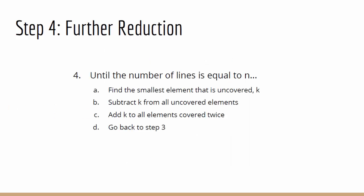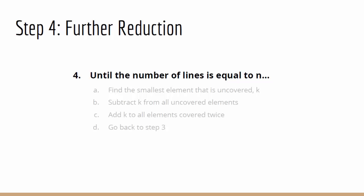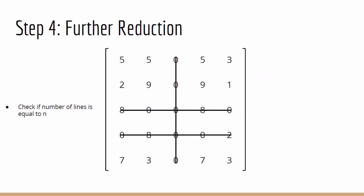Step 4, further reduction. First off, we need to check whether the number of lines we have drawn in our matrix is equal to the number of rows. In our case, we have 5 rows but only 3 lines, so we have to continue with the step.